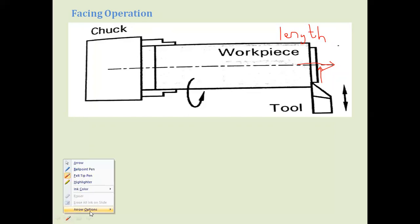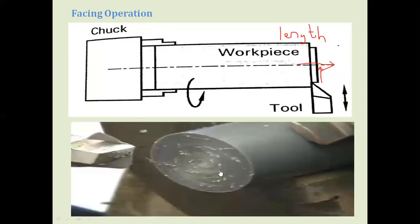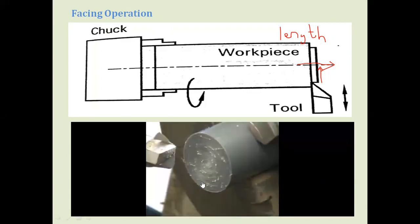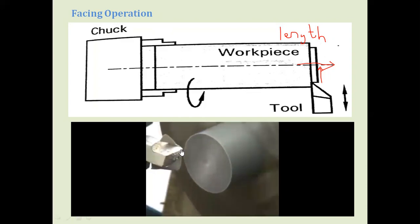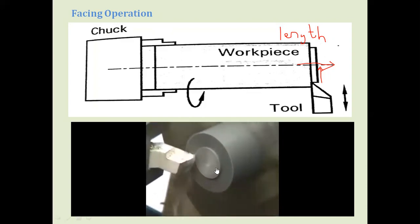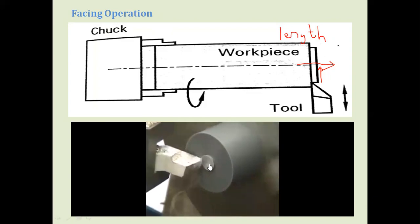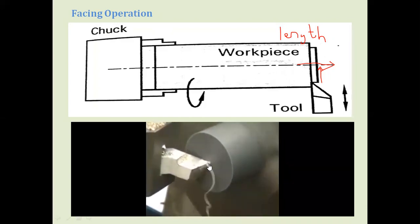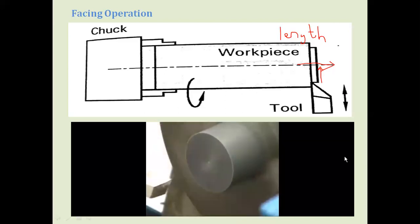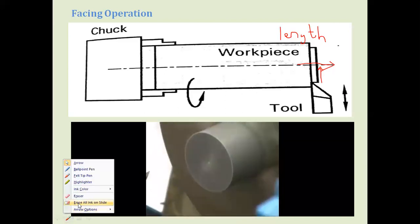In the facing operation video you can see the cutting tool approaching the workpiece and moving perpendicular to the axis of rotation. The surface is removed to reduce the length of the workpiece; metal is removed in the form of chips, and the length of the material is being reduced. This is the facing operation.